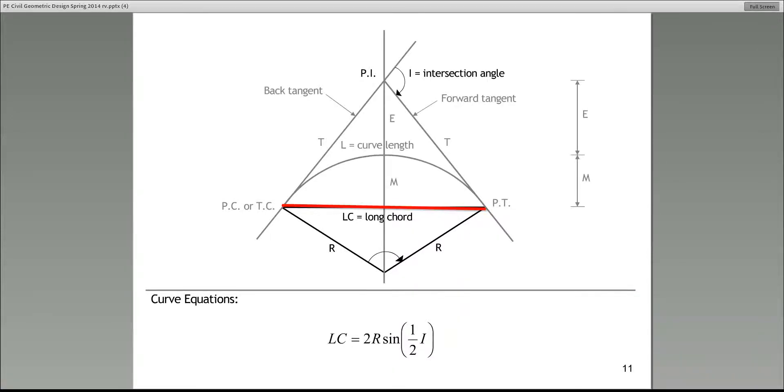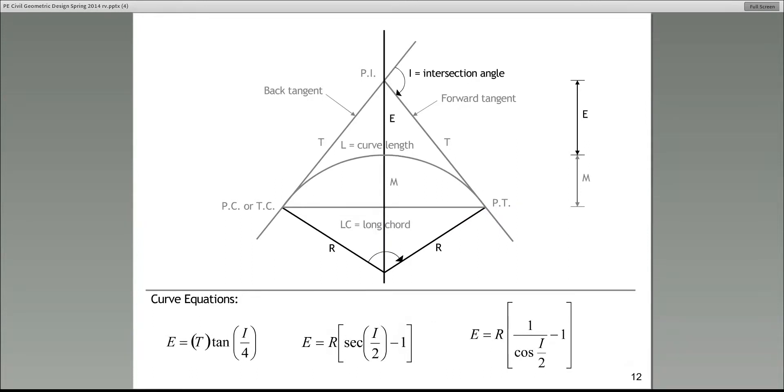The line that connects PC to PT is called the long cord. Now this equation down here gives you the relationship between long cord, radius, and I. What's I again? You got it, the intersection angle.